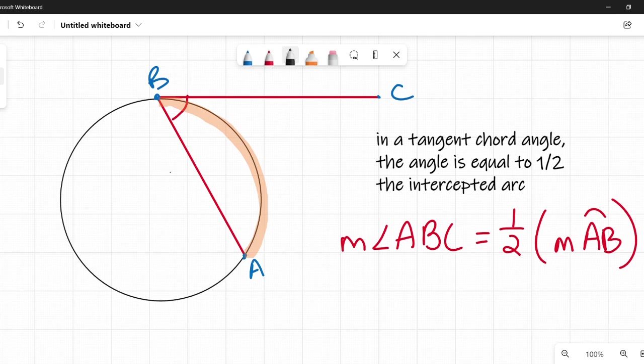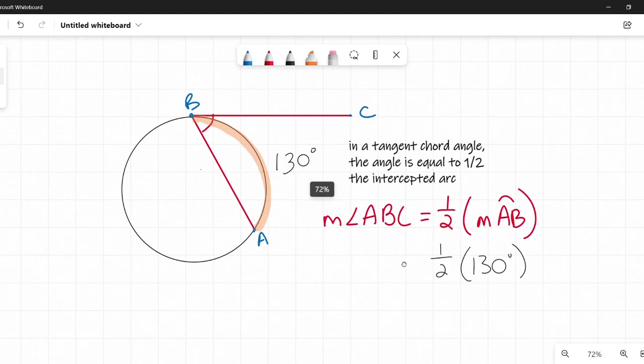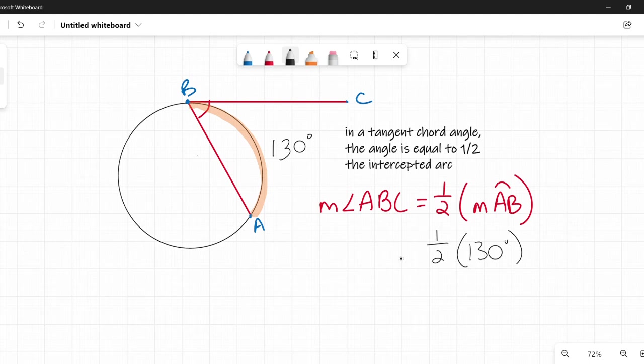If I said that arc AB was 130 degrees, then I can just plug that in over here and say, okay, half of 130 is going to be my angle ABC. One half of 130 or 130 divided by 2 is 65 degrees. So my angle ABC is 65 degrees. So this is very straightforward, just saying take the intercepted arc, divide it by 2. So that's not too tough.